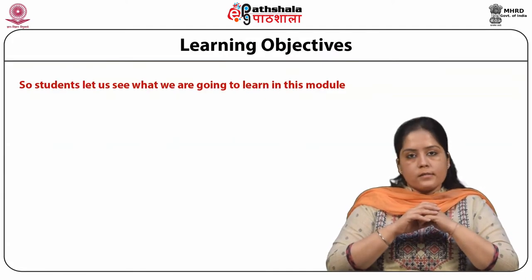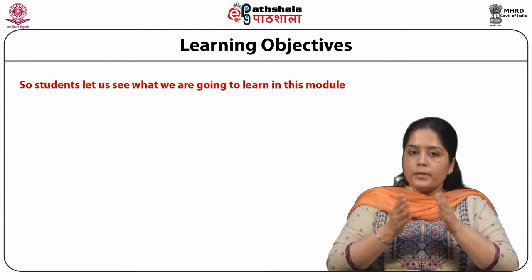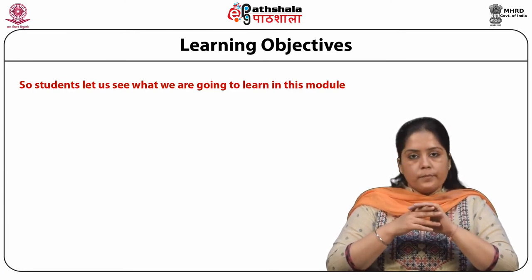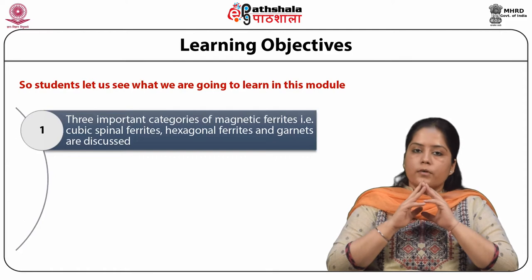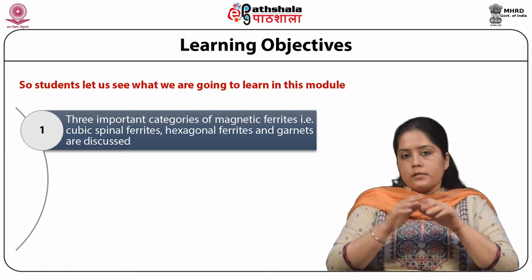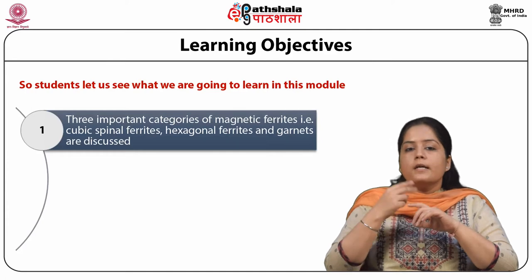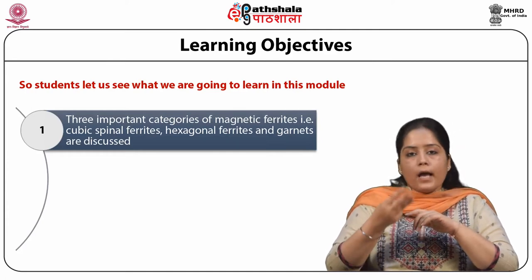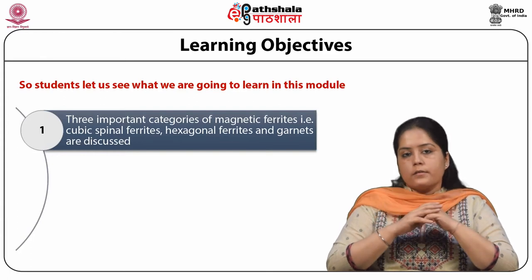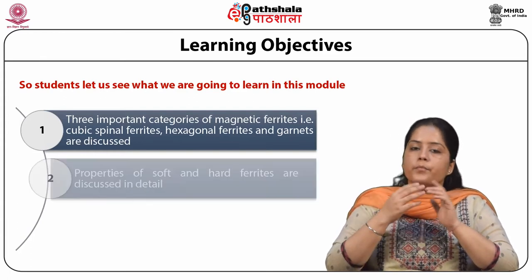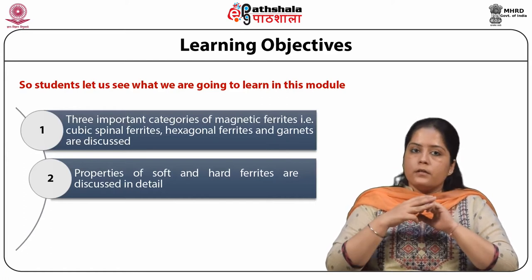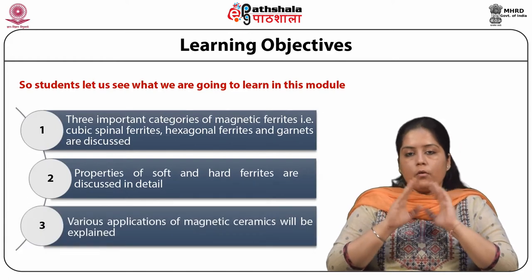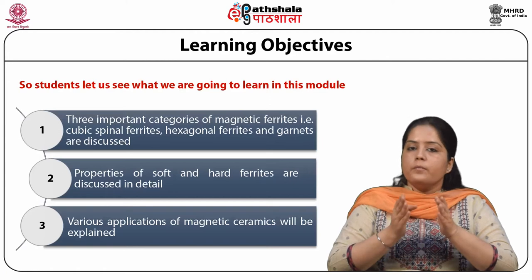Let us discuss the main points covered in this module. First, the three important categories of Magnetic Ferrites — Cubic Spinel Ferrites, Hexagonal Ferrites, and Garnets — are discussed. Second, properties of Soft and Hard Ferrites are discussed in detail. Third, various applications of Magnetic Ceramics will be explained.